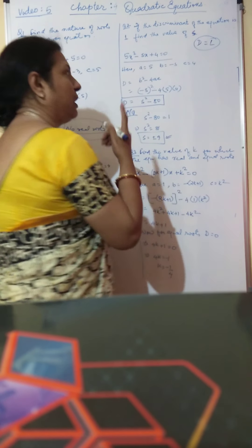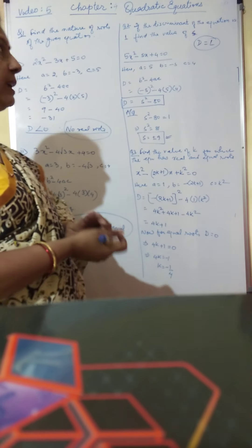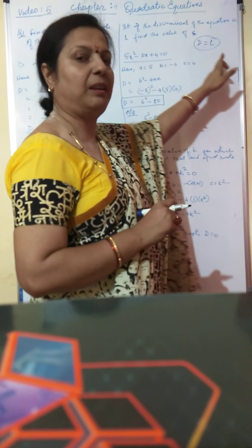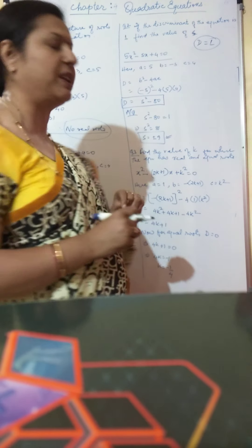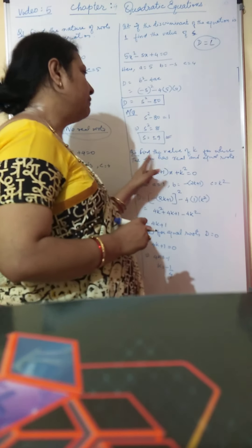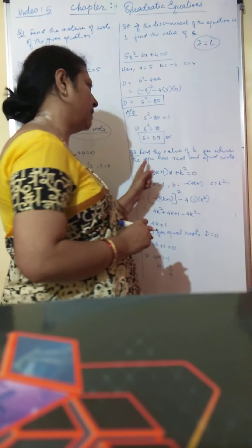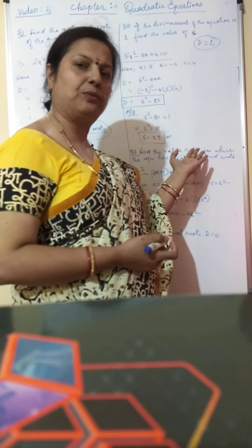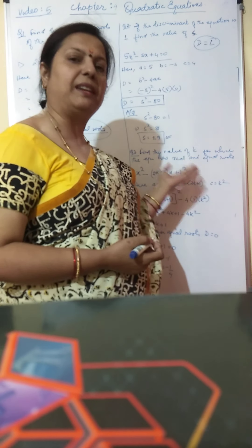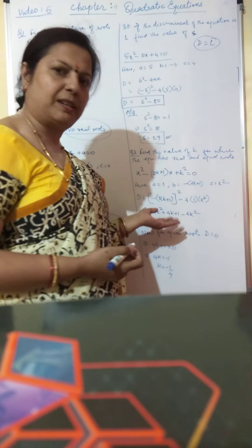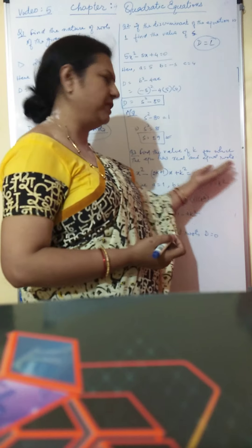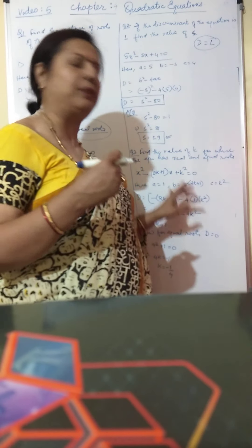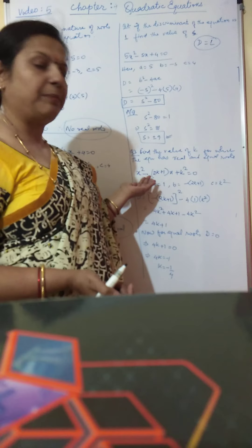This is how we find the value of an unknown when we are given the discriminant. Note the difference: in question 2, the discriminant value is given; in question 3, the nature of the discriminant is given. Question 3 is: find the value of k for which the equation has real and equal roots. I have taken a question of a slightly higher difficulty level, as the simpler ones you can do on your own.